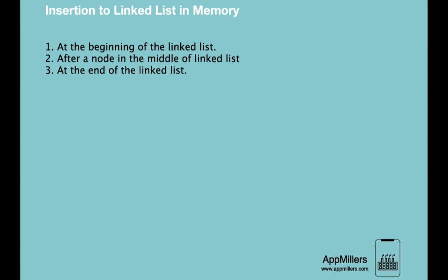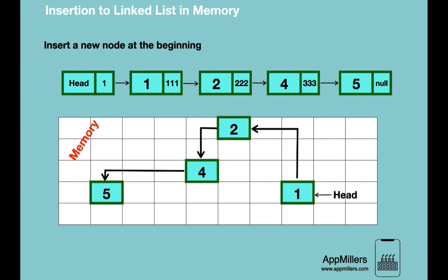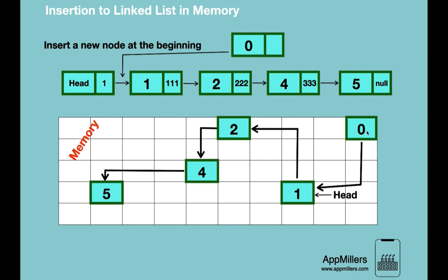First, let's look at adding a node at the beginning. We have a sample linked list allocated in memory. We want to insert an element of value zero at the beginning. First, we allocate random memory in the heap for the new node. Then the address of the first node (value 1) is assigned as the next pointer of the newly created node. Then we assign the address of the newly created node to head, breaking the previous connection between head and the old first node.